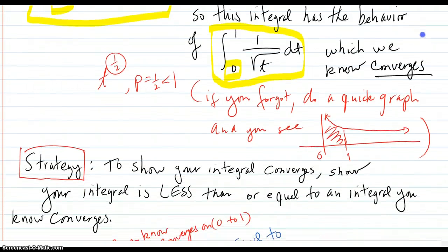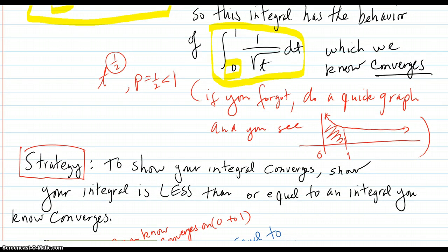If you forgot, do a quick graph. This curve is 1 over square root of t. Converges very slowly as you're going to infinity, but it slams up against the asymptote at the y-axis fast, which makes this area converge.